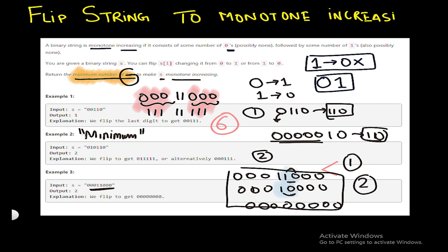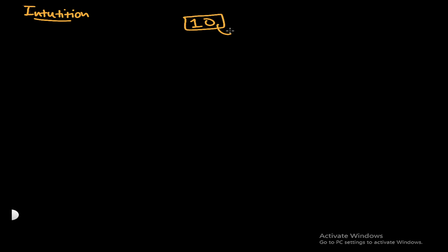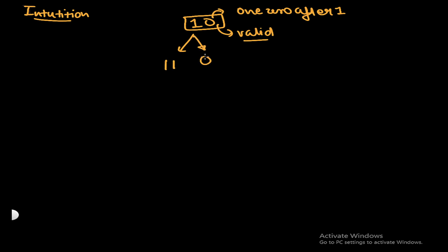I recommend pausing and thinking about the solution first. Here is the intuition: take the example '10'. This is not monotone increasing because we have a zero after a one. Two options: change to '11' or '00'. Both require 1 flip, so the minimum number of flips is 1.